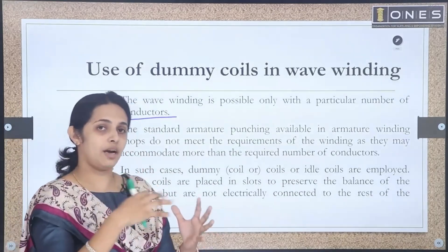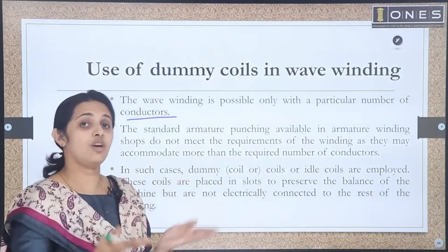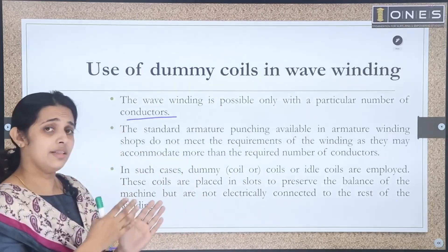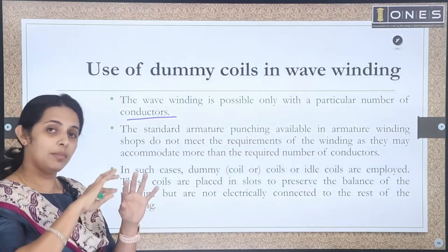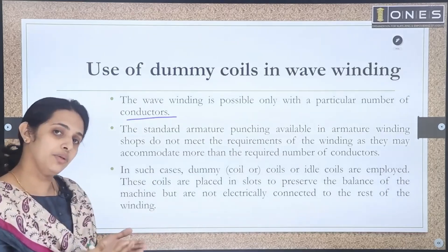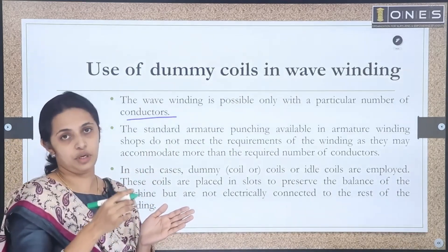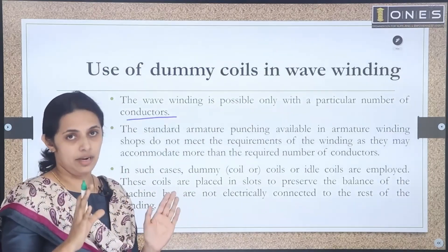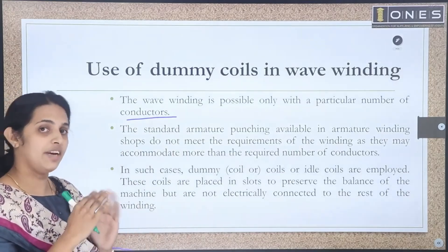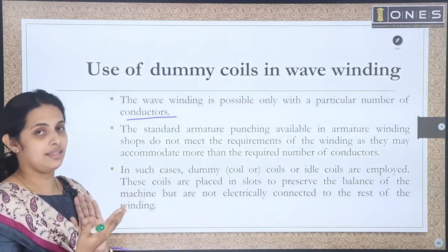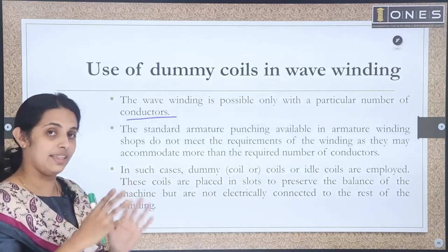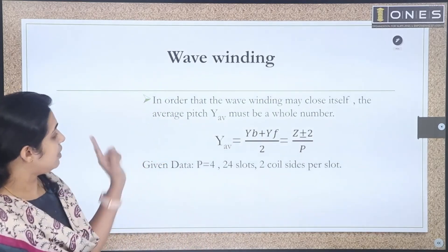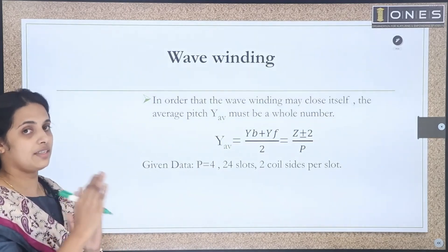If we use standard armature punchings, there will be a fixed number of slots, and all slots must be used. If a particular number of conductors cannot form a closed wave winding, we place dummy coils in the vacant slots to maintain mechanical balance of the armature. The dummy coils are electrically isolated but physically placed to balance the rotor.